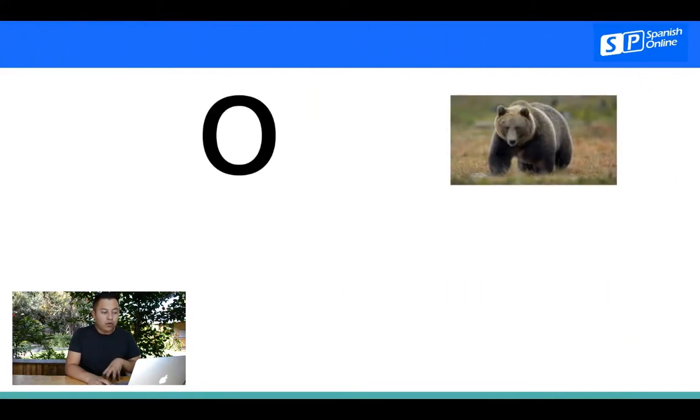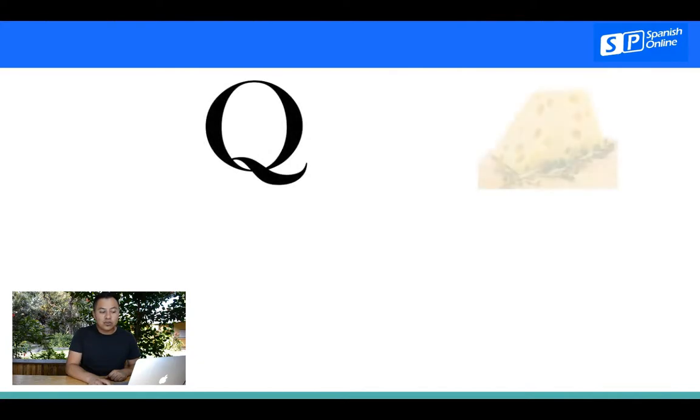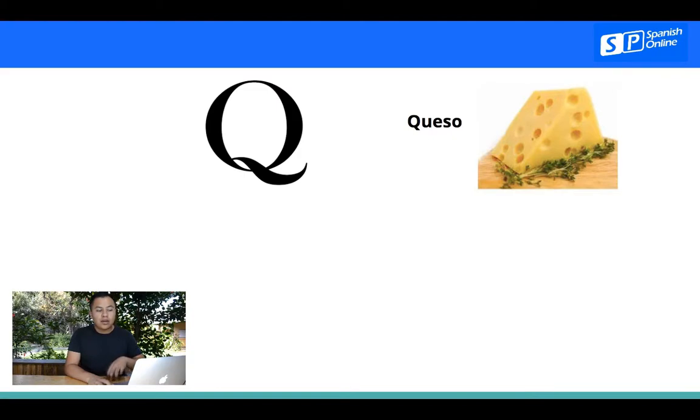Continuamos, we continue with the O, oso, pe, de papaya, la cu, de queso. In this case, with Q, con la letra Q, we need to use U before the Q. In this case, for example, queso.